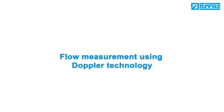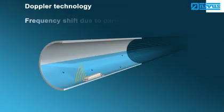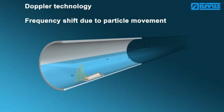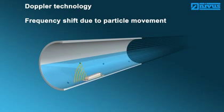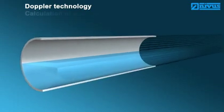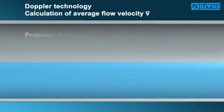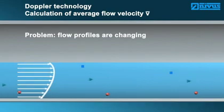Flow measurement using Doppler systems. The Doppler technology uses a sensor continuously transmitting ultrasonic signals at a constant frequency. The particles contained in the medium reflect the signal. The particle movement shifts the frequency of the reflected signal. The frequency shift is detected by the sensor. The greater the particle velocity, the greater the frequency shift. Doppler measurement is a spot velocity measurement — the sensor is not able to determine at which level the velocity has been detected.